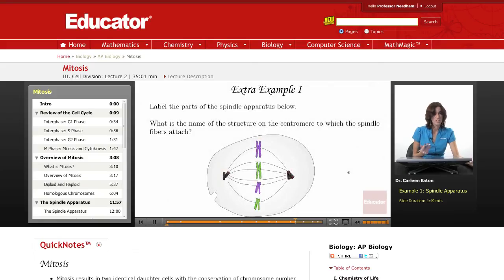All right, to practice, we're going to look at four examples. Label the parts of the spindle apparatus below. What is the name of the structure on the centromere to which the spindle fibers attach?